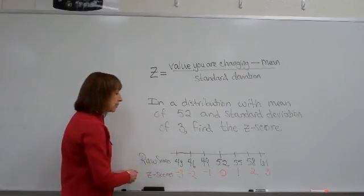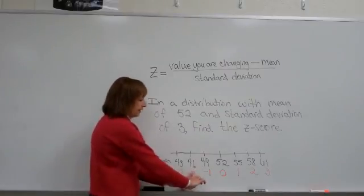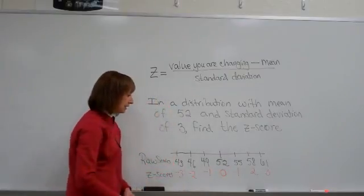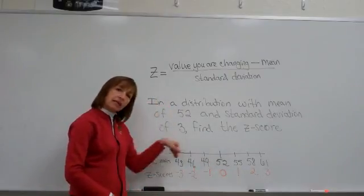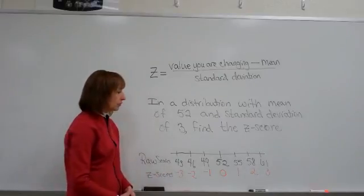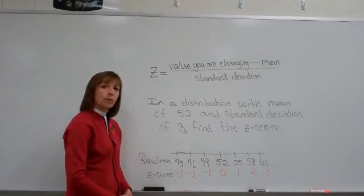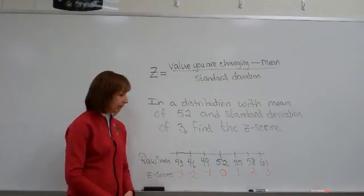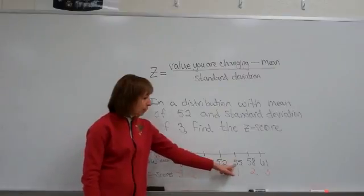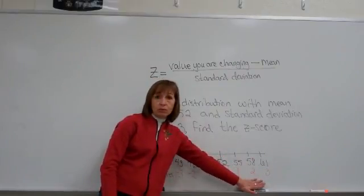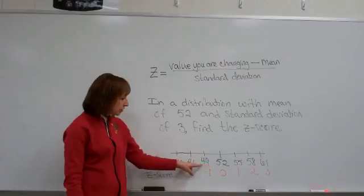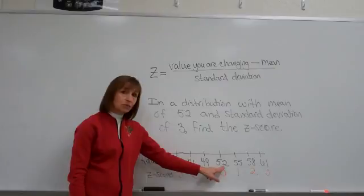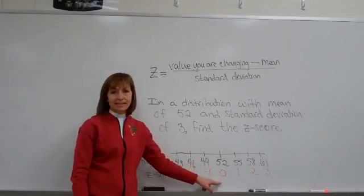Typical values from a data set will fall in the span from negative 2 to positive 2 — those are normal z-scores you can anticipate. Notice: numbers bigger than the mean have positive z-scores, numbers smaller than the mean have negative z-scores, and a number that sits right at the mean will have a z-score of zero.